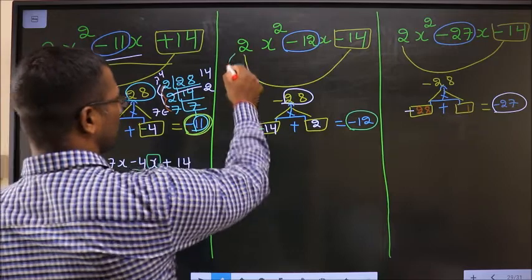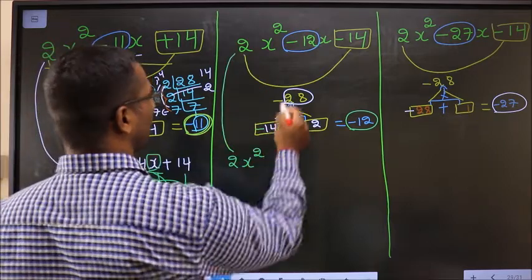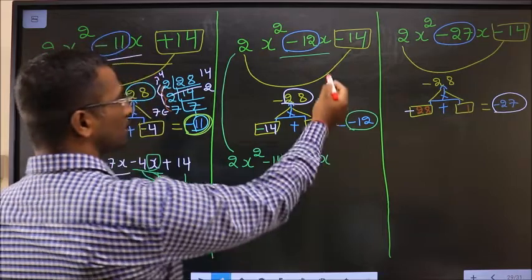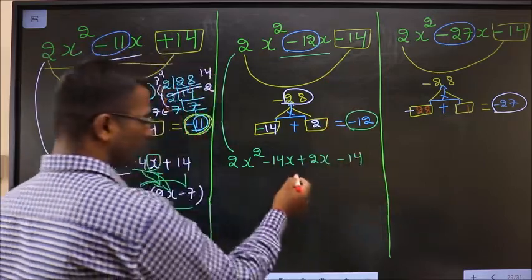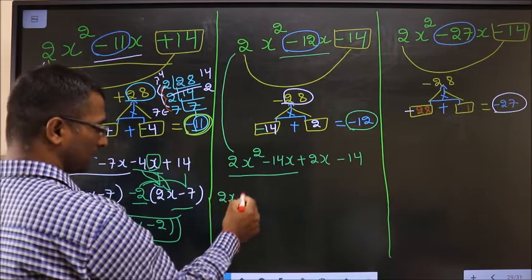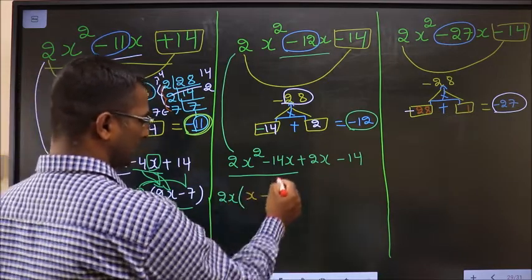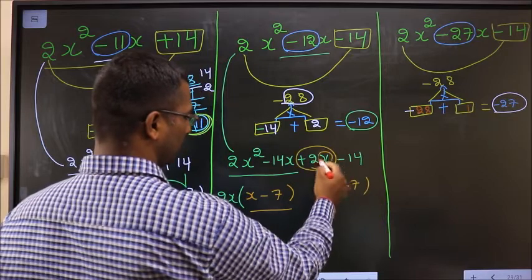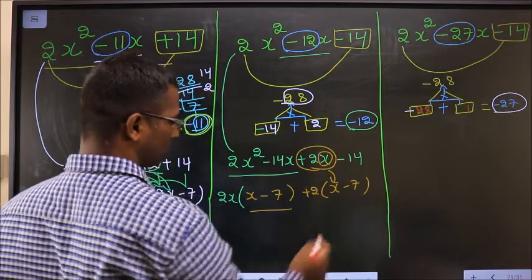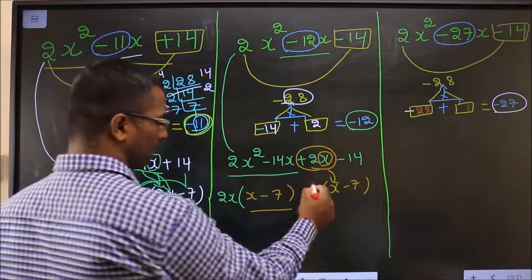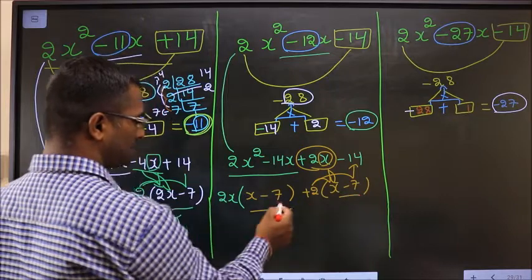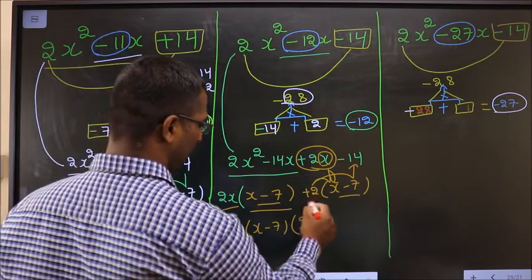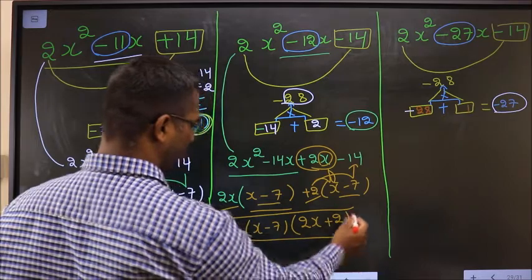For the second expression: 2x² - 12x - 14 becomes 2x² - 14x + 2x - 14. Taking 2x common from the first two terms gives 2x(x - 7). From the last two terms, taking +2 common gives +2(x - 7). So the factorized answer is (x - 7)(2x + 2).